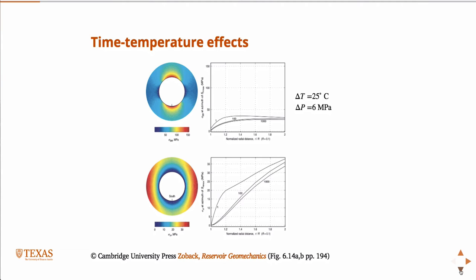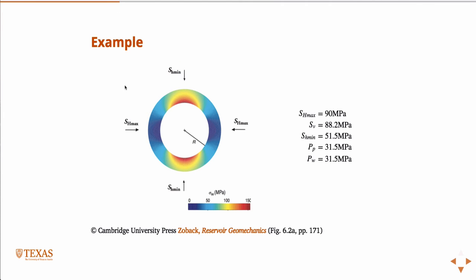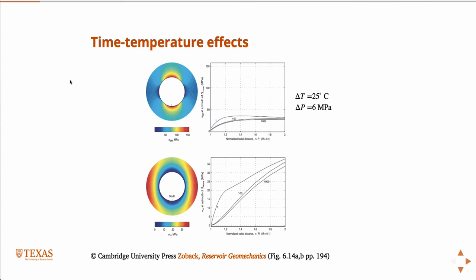If we look at the problem—and this is the same conditions, it's the same problem from the homework, from last lecture—but now we look at a delta T of 25 degrees C, and in this case we're drilling overbalanced a little bit. 6 megapascal difference. Then what you see over here is the sigma theta-theta at the azimuth of SH max versus normalized distance.